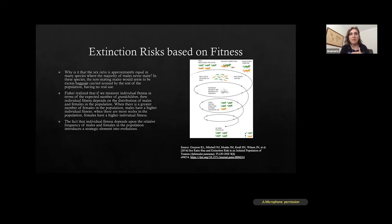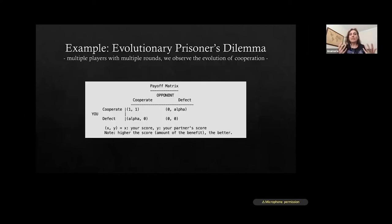And this was first developed by Fischer in the genetic theory of natural selection in his attempt to explain the approximate equality of the sex ratio in mammals. So there are extinction risks that are based on fitness. And why is that the sex ratio is approximately equal in many species where the majority of the males never mate? So in these species, the non-mating males would seem to be excess baggage carried around by the rest of the population without having any real use. So Fischer realized that if we measure individual fitness in terms of the expected number of grandchildren, then individual fitness depends on the distribution of the males and the females in the population. When there is a greater number of females in the population, the males have a higher individual fitness. When there are more males in the population, females have a higher individual fitness. And the fact that individual fitness depends upon the relative frequency of males and females in the population introduces a strategic element into evolution.